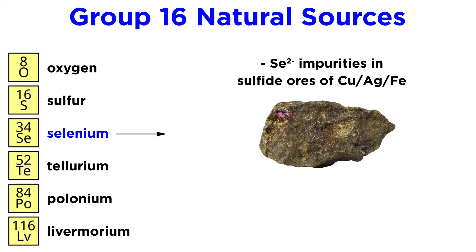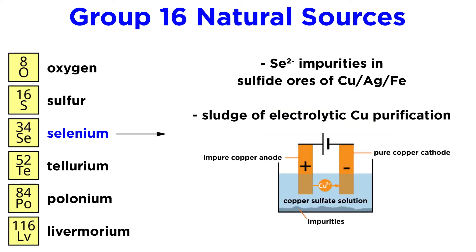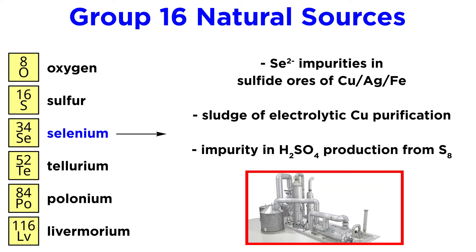Selenium is obtained from selenide impurities in sulfide ores of copper, silver, and iron, and is mainly recovered from the sludge of electrolytic copper purification. It can also be obtained as an impurity in sulfuric acid production from elemental sulfur.